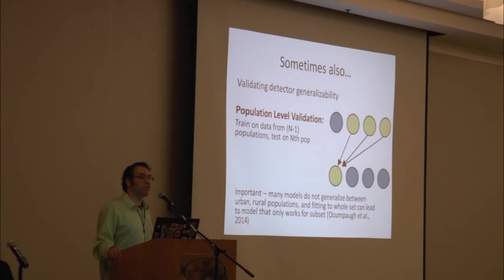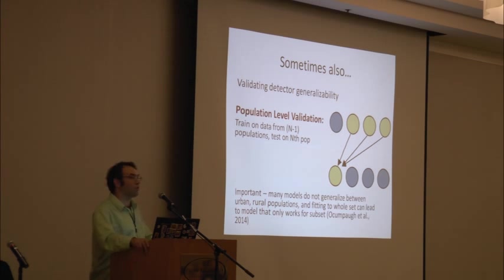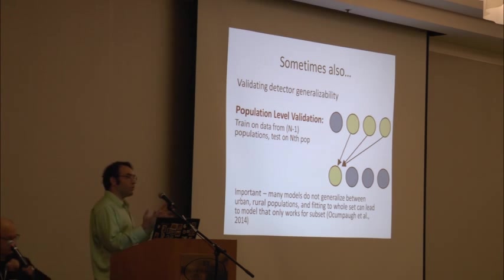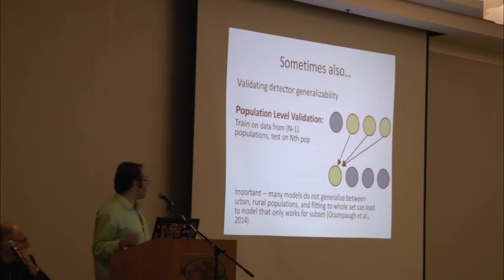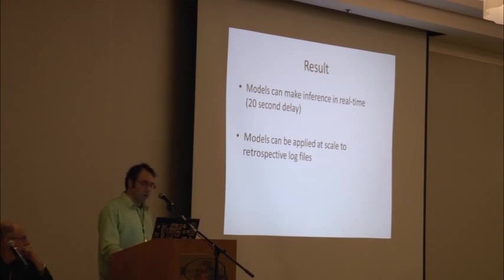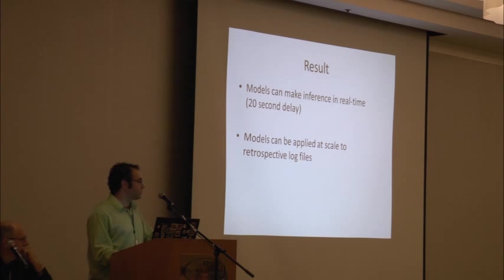Educational data mining has sometimes been criticized for treating the data set you start with as the only one you'll ever see. If you're building models on a training set, it's very tempting to just get the most convenient set you can — suburban kids near your university — and avoid dealing with districts like New York City where you need a six-month process just to walk into a classroom. But many models don't generalize between urban and rural populations. We're very careful to build our models on a broader data set and test whether they work on urban, rural, and suburban students. The result: models that can make inferences in real time — or at least with a 20-second delay — and models that can be applied at scale to retrospective log files, enabling both intervention and analysis.